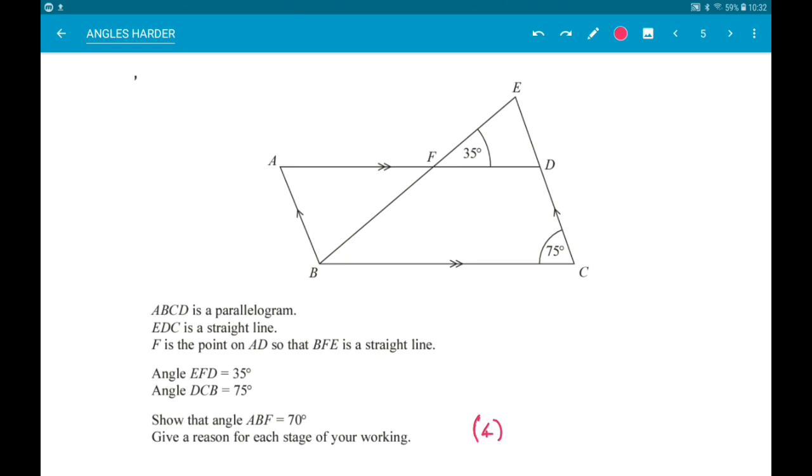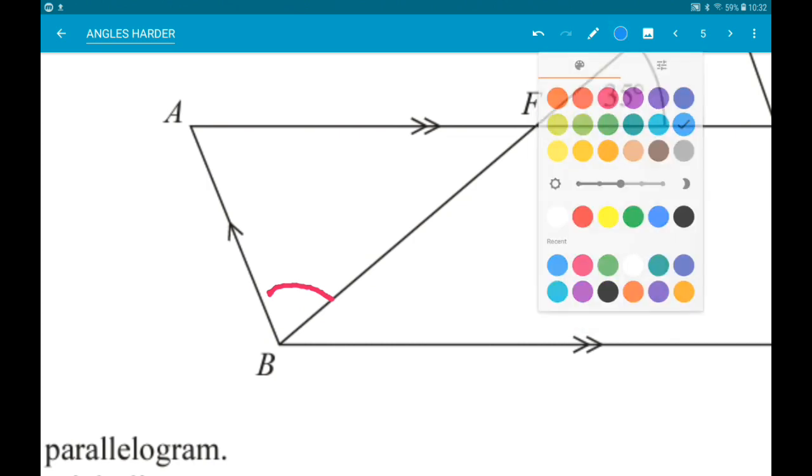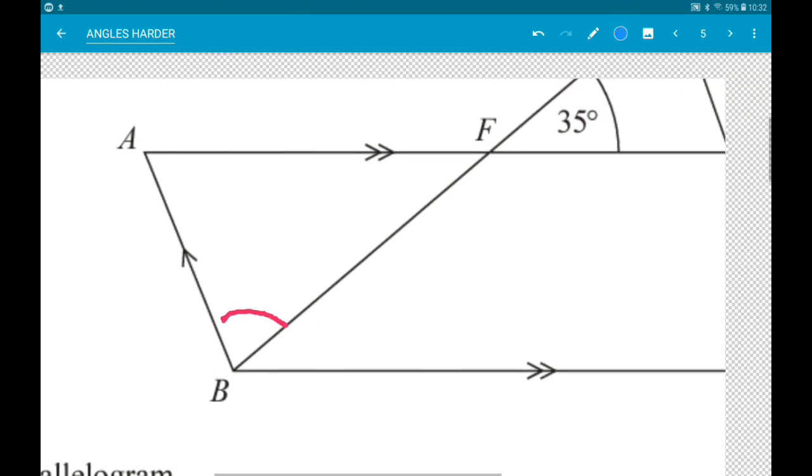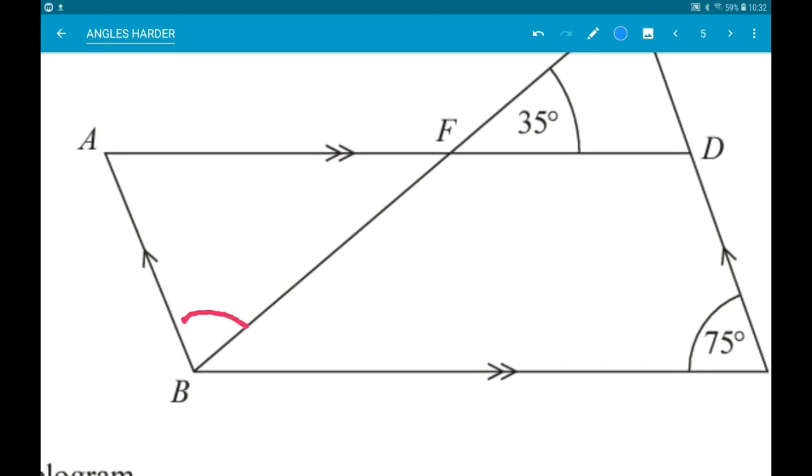So ABF is this angle here. So first up we go to this 35 degree angle here. So this angle and the 35 degree angle are vertically opposite. So they are equal. So that would be the reason for that stage.